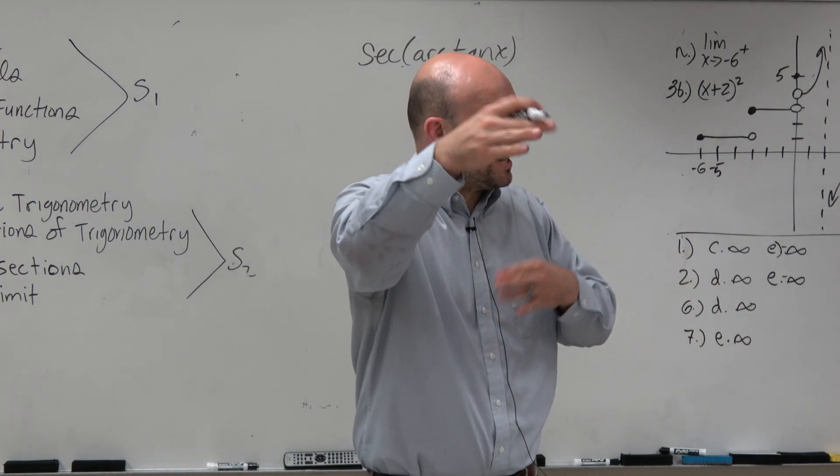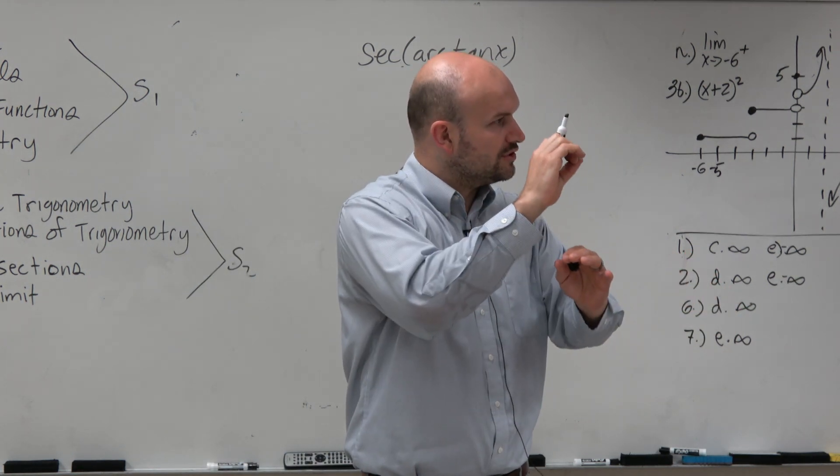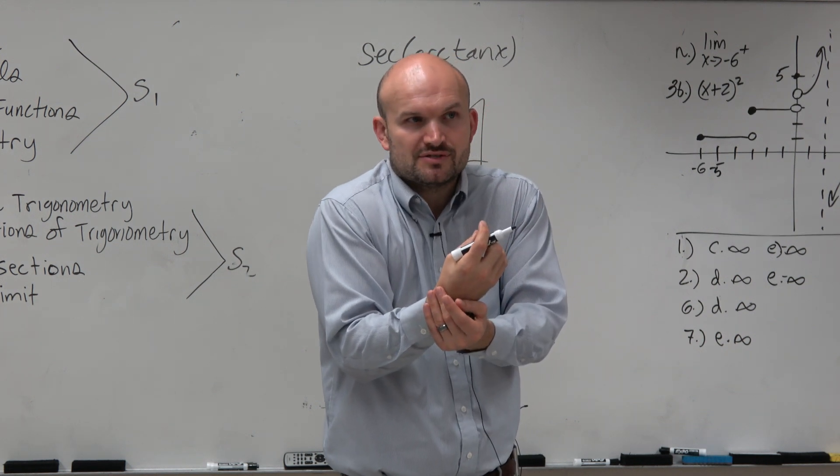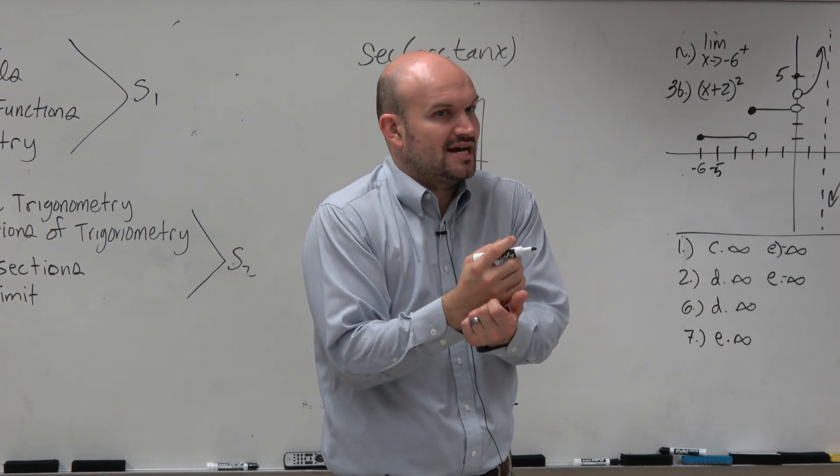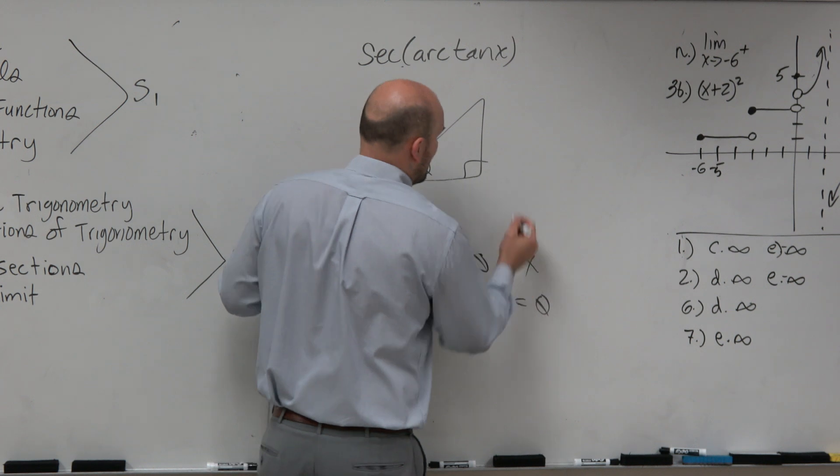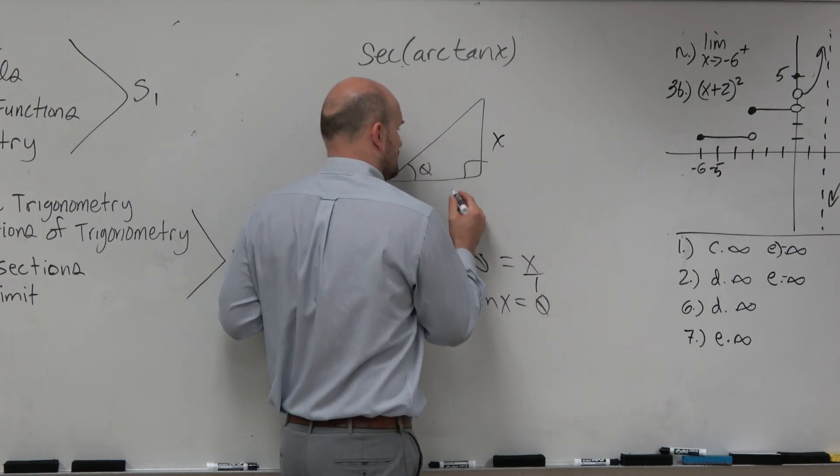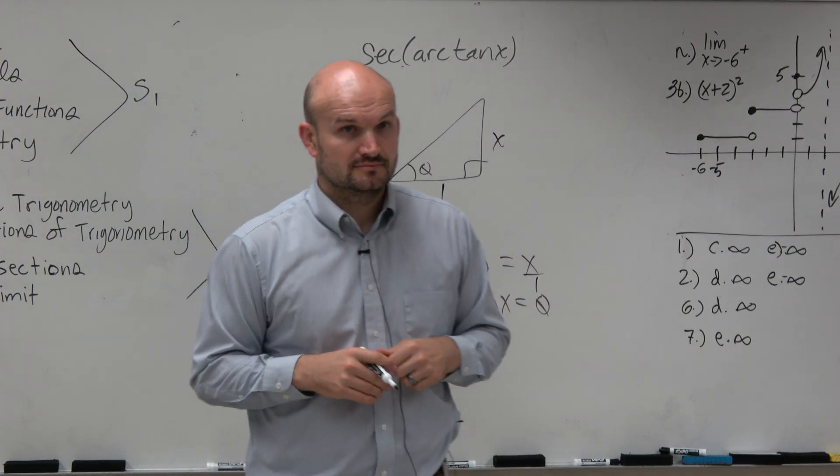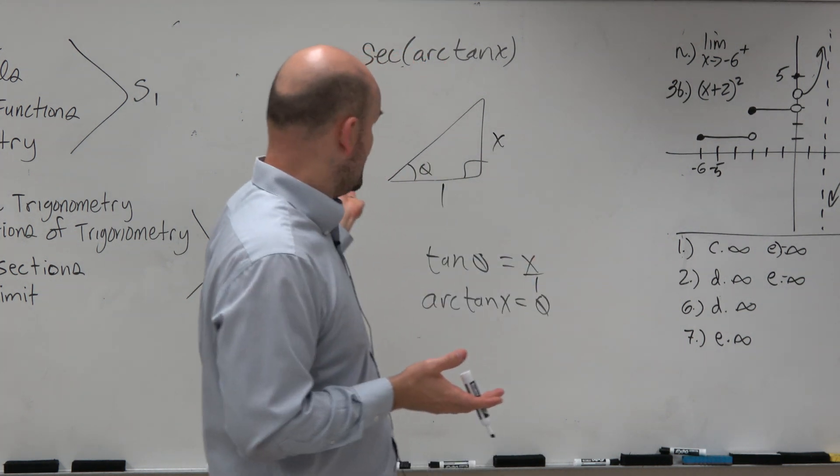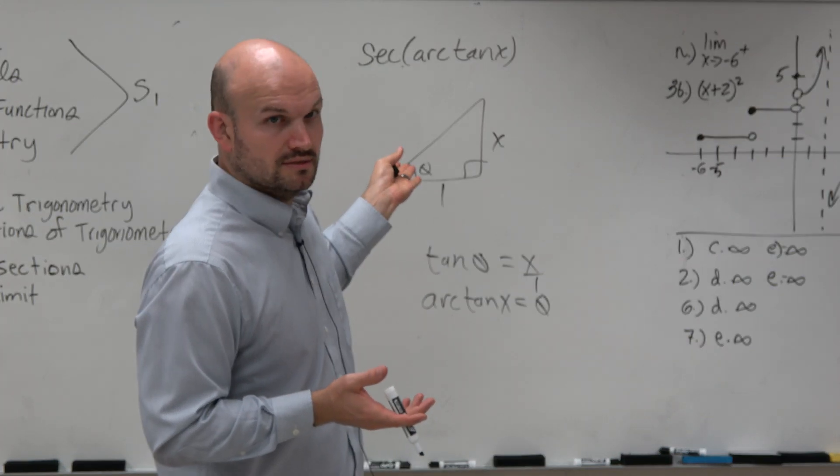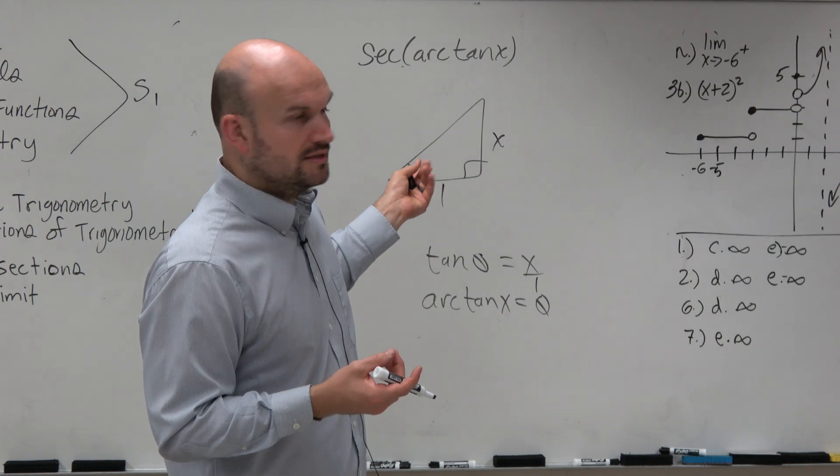Yeah, it's the y over the x when we're looking at the unit circle. But we don't even know if this has a point on the unit circle. So we can also think of tangent as opposite over adjacent. Isn't the tangent, wouldn't that be the same? Tangent of theta is x over 1, which is just x. Yes,